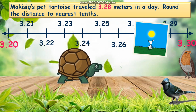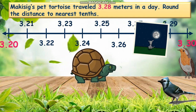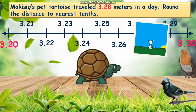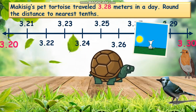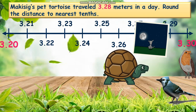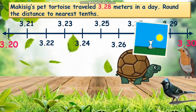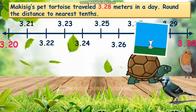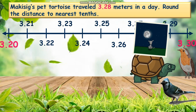Let's start by using the number line in rounding off decimals. Let me read you a story problem. Moccasig's pet tortoise travelled 3 and 28 hundredths metres in a day. Round the distance to the nearest tenths.